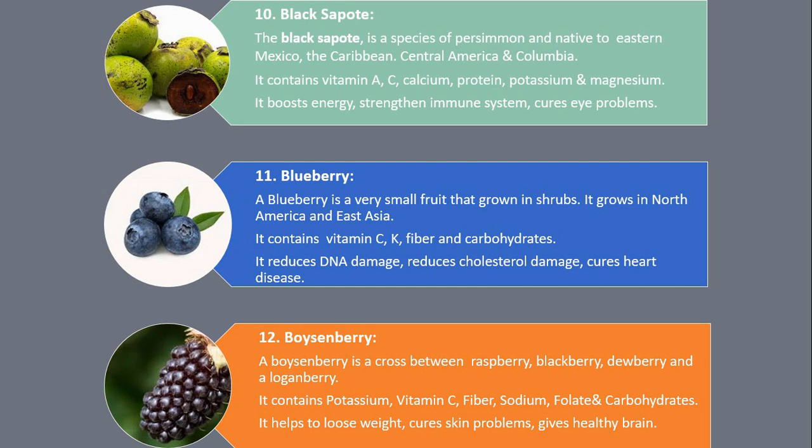Number 11. Blueberry. A blueberry is a very small fruit that grows in shrubs. It grows in North America and East Asia. It contains vitamin C, K, fiber and carbohydrates. It reduces DNA damage, reduces cholesterol damage, and cures heart disease.